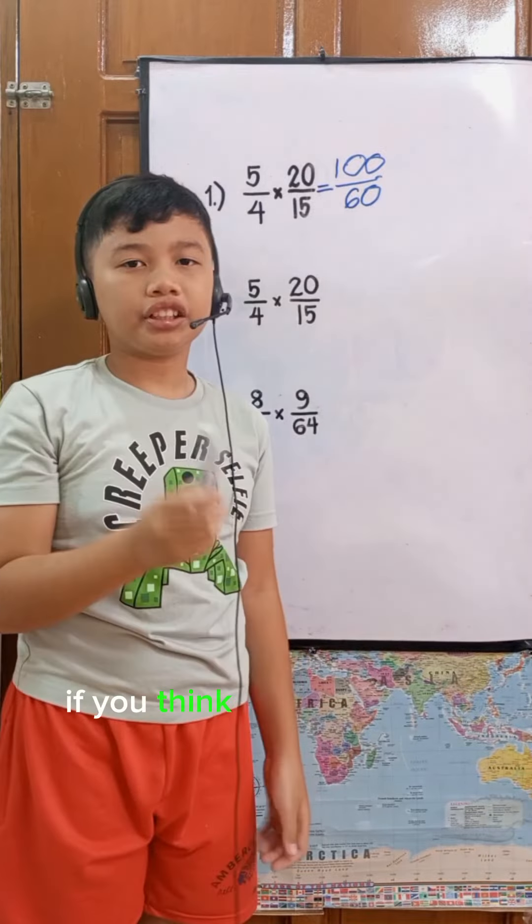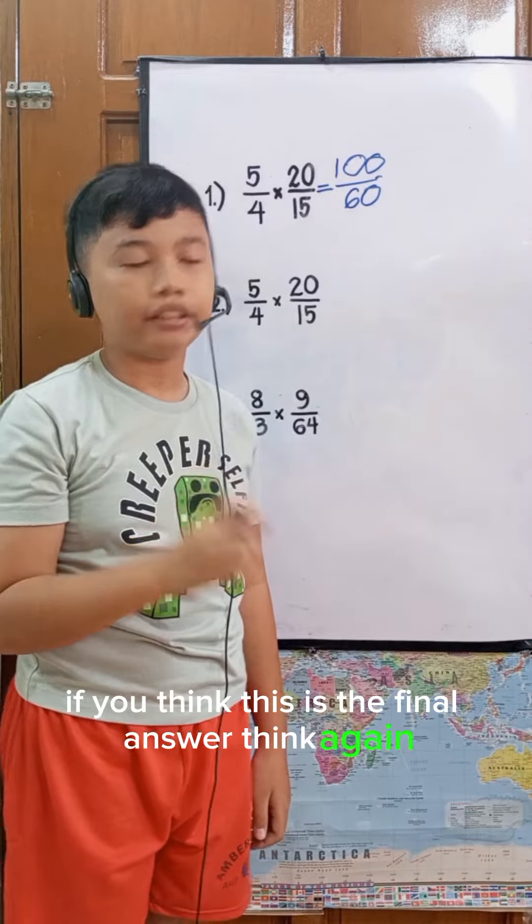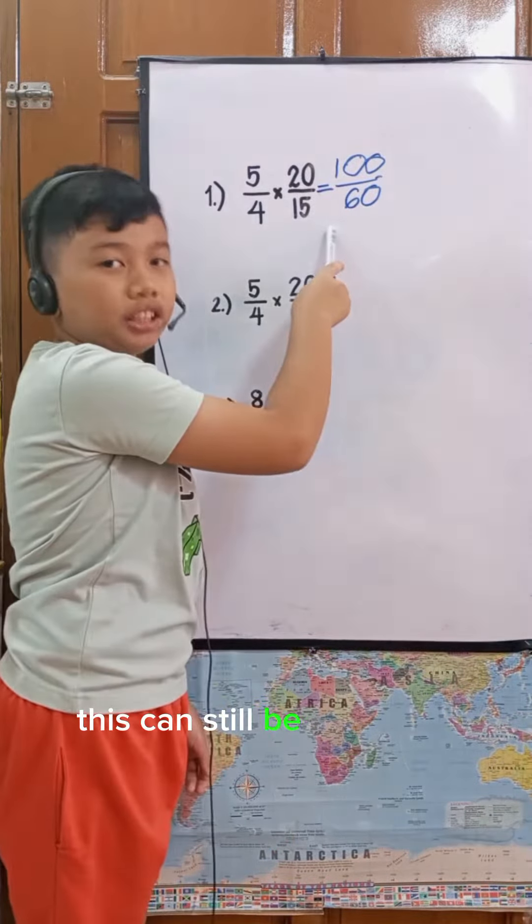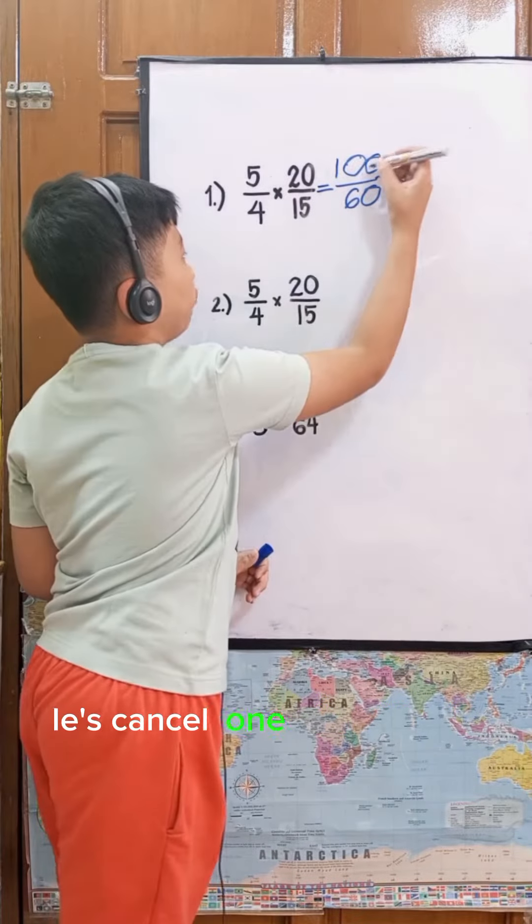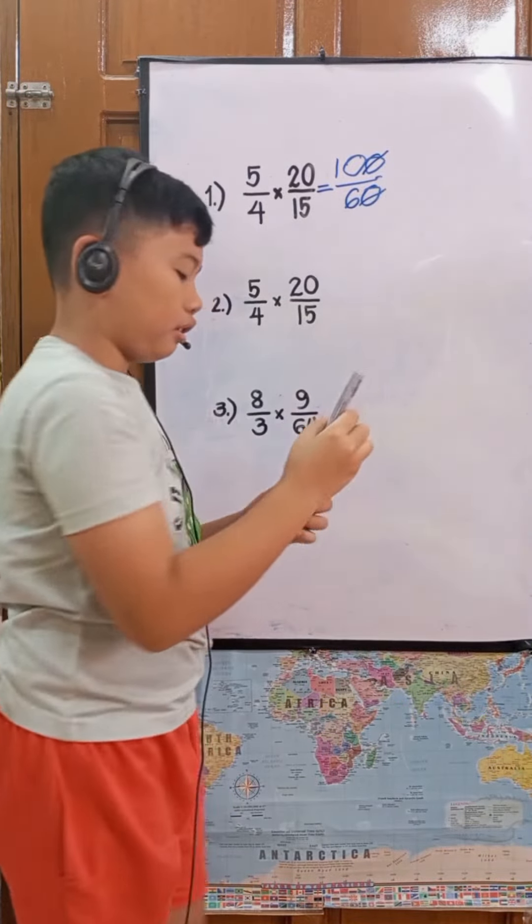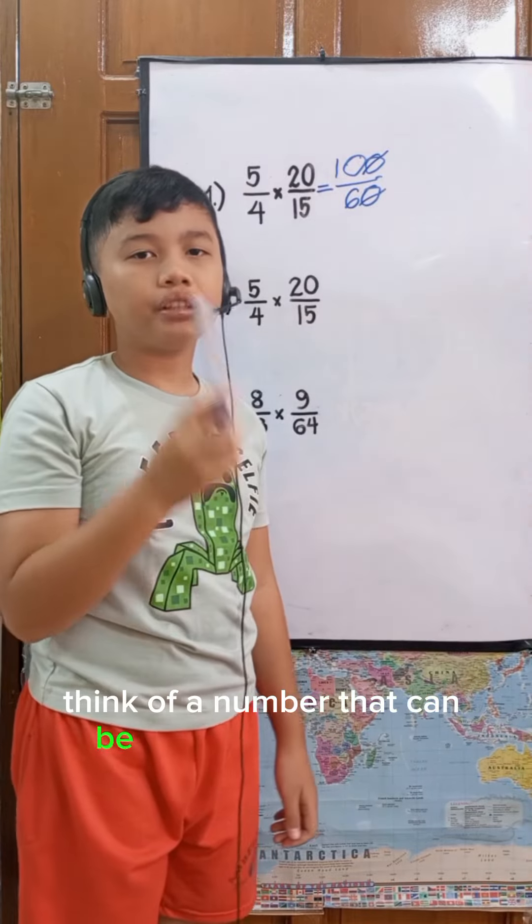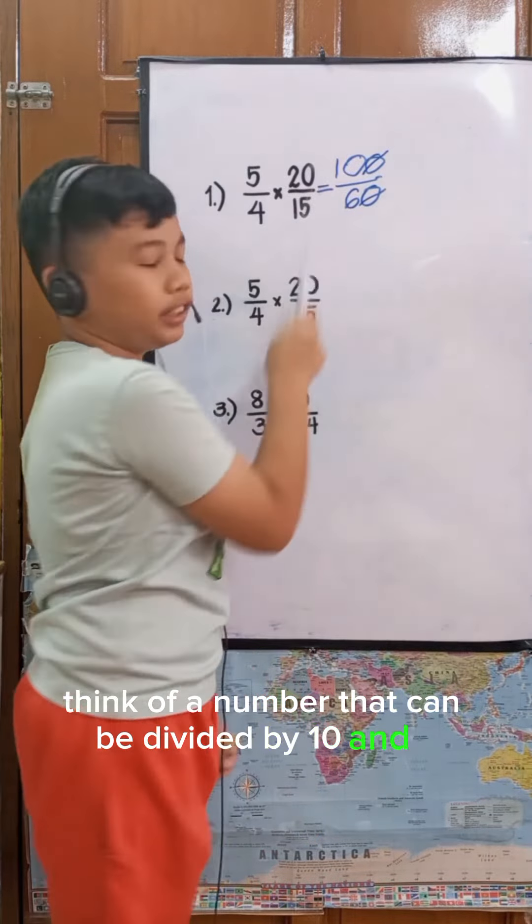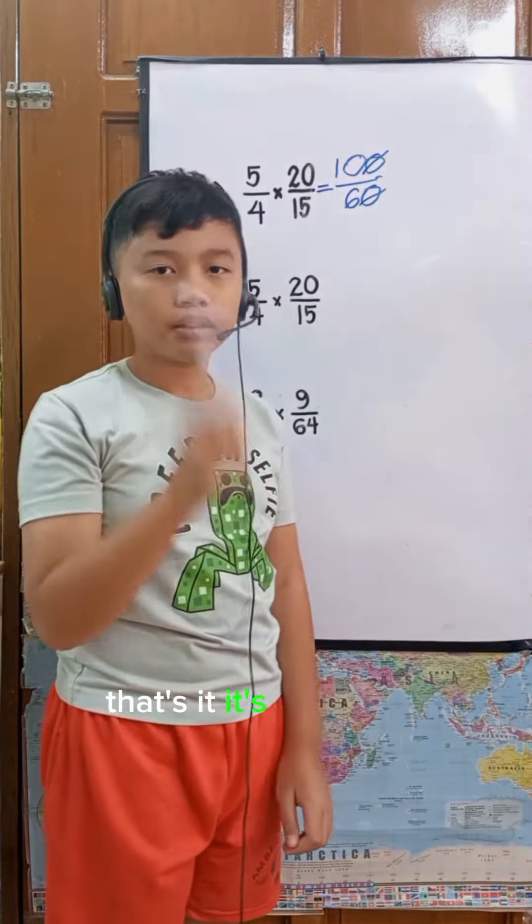If you think this is the final answer, think again. This can still be simplified. Let's cancel one pair of zeros. Think of a number that can be divided by 10 and 6. That's it, it's 2.